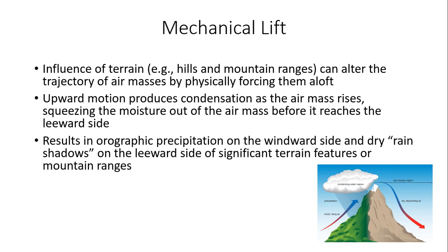The windward side produces condensation as the air mass rises, squeezing moisture out before it descends the leeward side. Major mountain chains like the Rocky Mountains and Appalachian Mountains in the United States have a cooler, wetter climate on the windward side. On the leeward side, you can get what's known as rain shadows, where vegetation looks much different compared to the greener vegetation on the windward side.